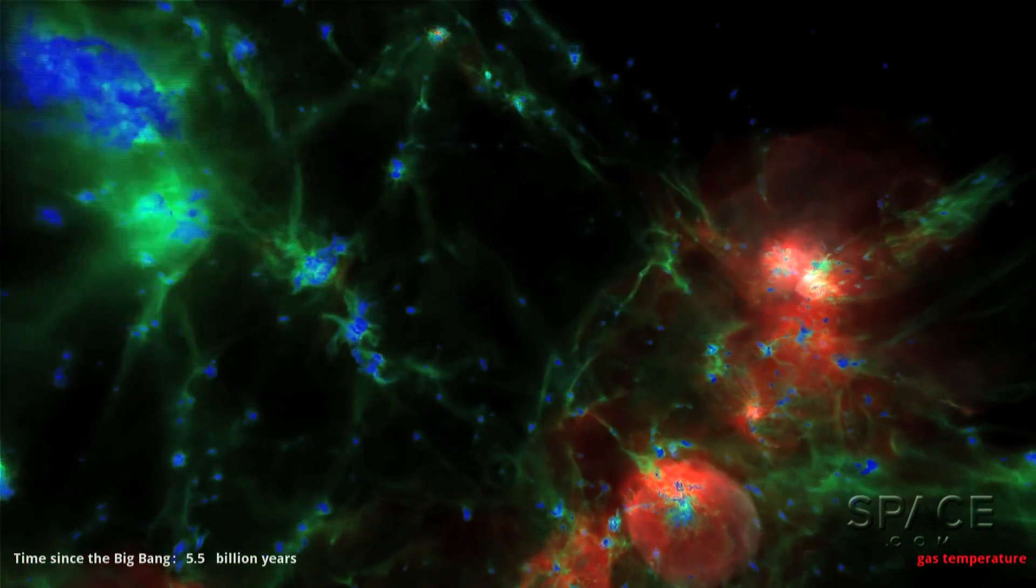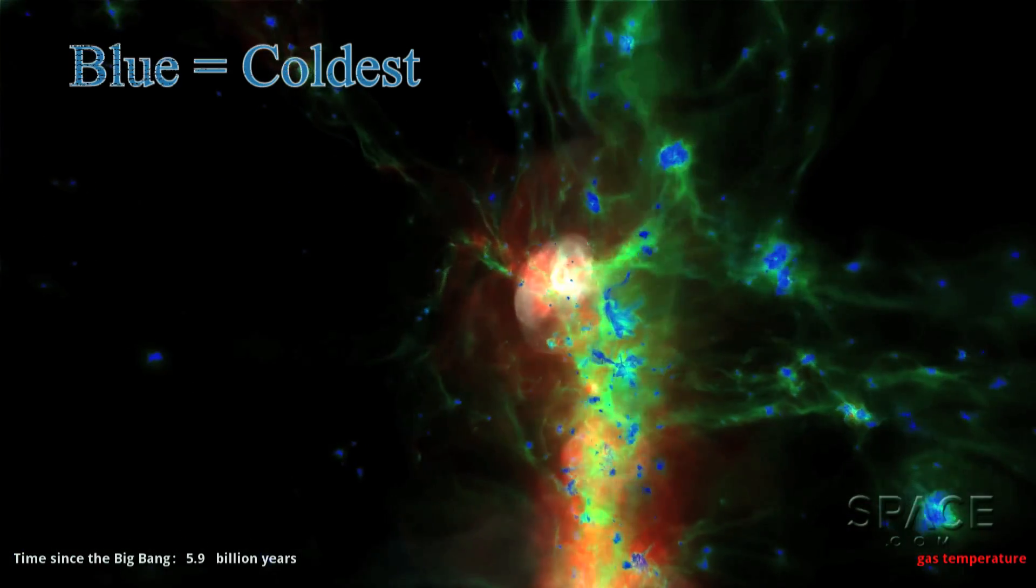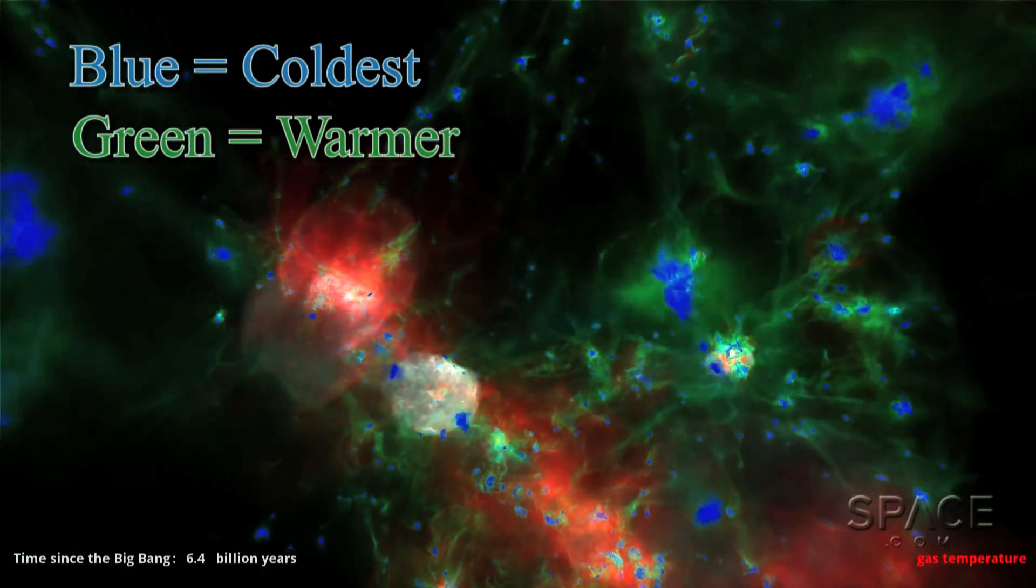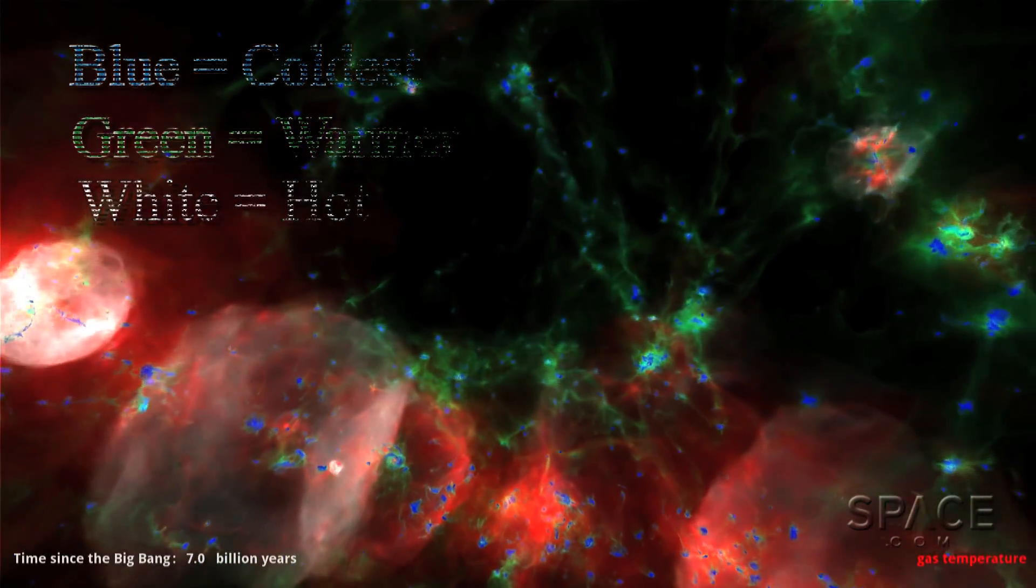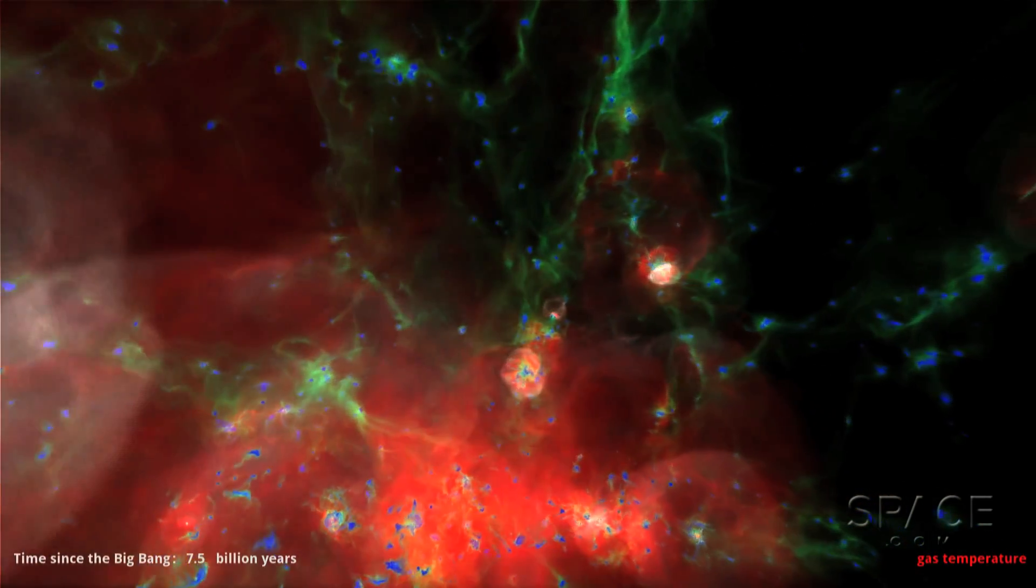We're watching now the temperature as matter under gravity heats up. Blue marks the coldest areas. Greens are warmer. Whites are white-hot. As more stars condense out of cold gas, an evolution in their types develops.